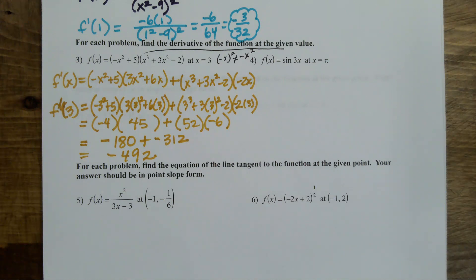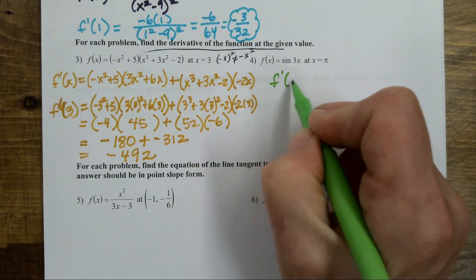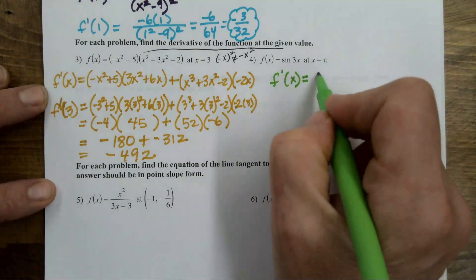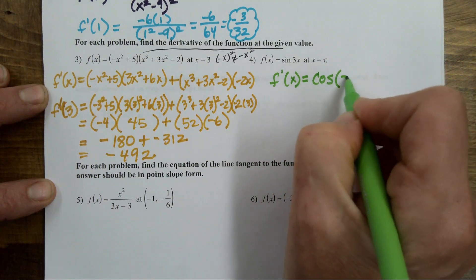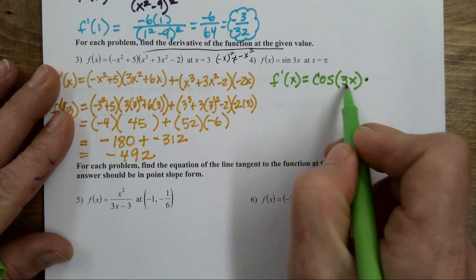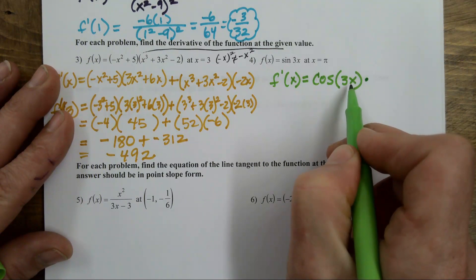I have to talk myself through it. F prime of x — I have to do the derivative of the outer. The outer is the fact that I'm taking the sine of something. The derivative of sine is cosine, so it's the cosine of 3x — I leave the inner as is. And then I multiply it by the derivative of the inner, which is the derivative of 3x, which is 3.